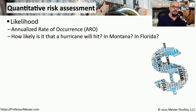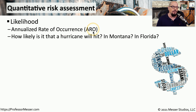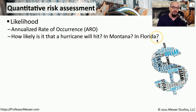Of course, we might want to associate specific quantitative values with these risks, and often that value is a dollar figure. This calculation might start with the likelihood of this particular issue occurring. An annualized rate of occurrence, or ARO, describes that likelihood. For example, how likely is it that a hurricane will hit this year? If you're in Montana, probably very low, but if you're in Florida, it might be a higher risk.